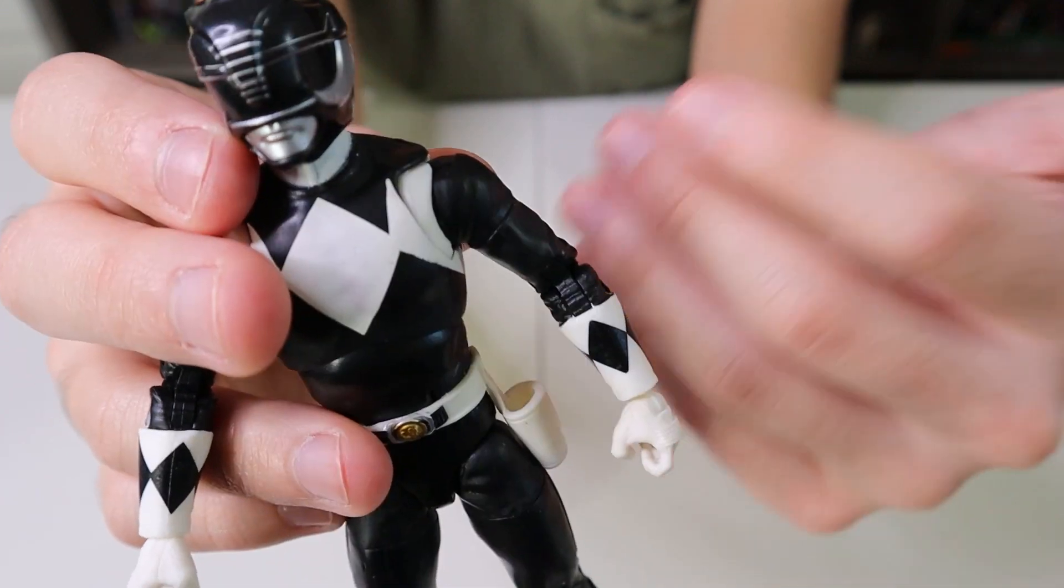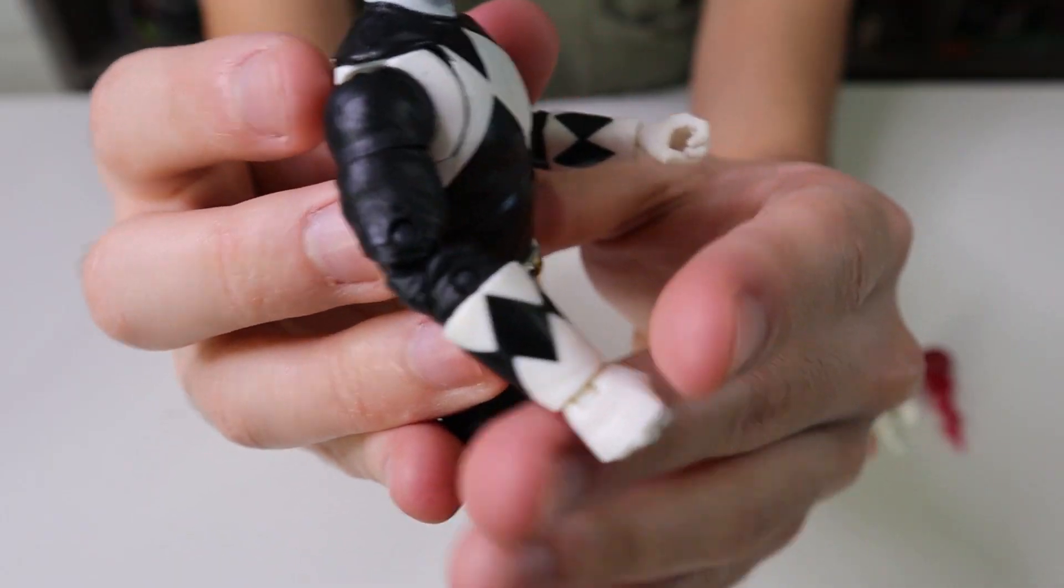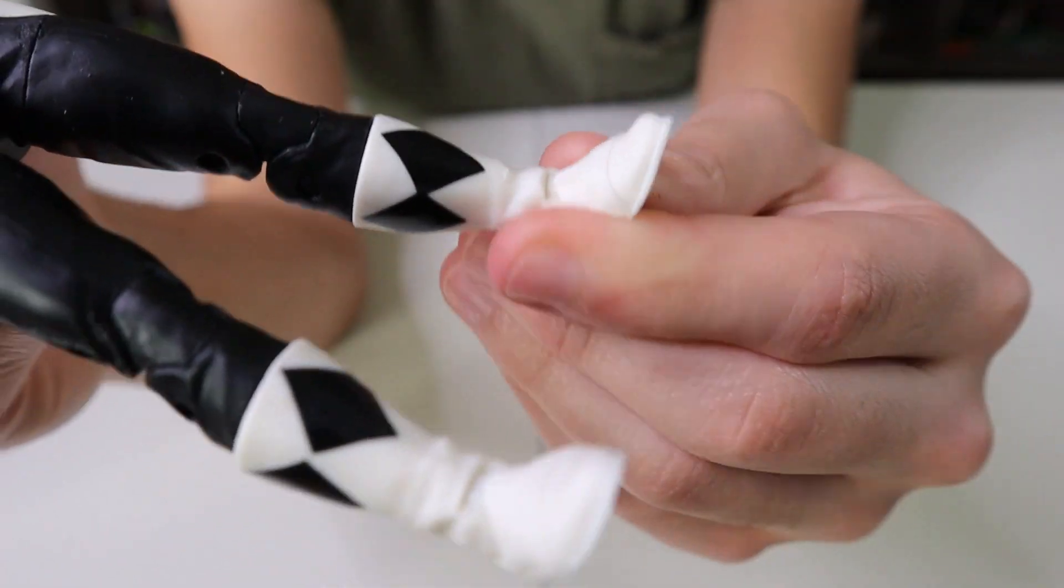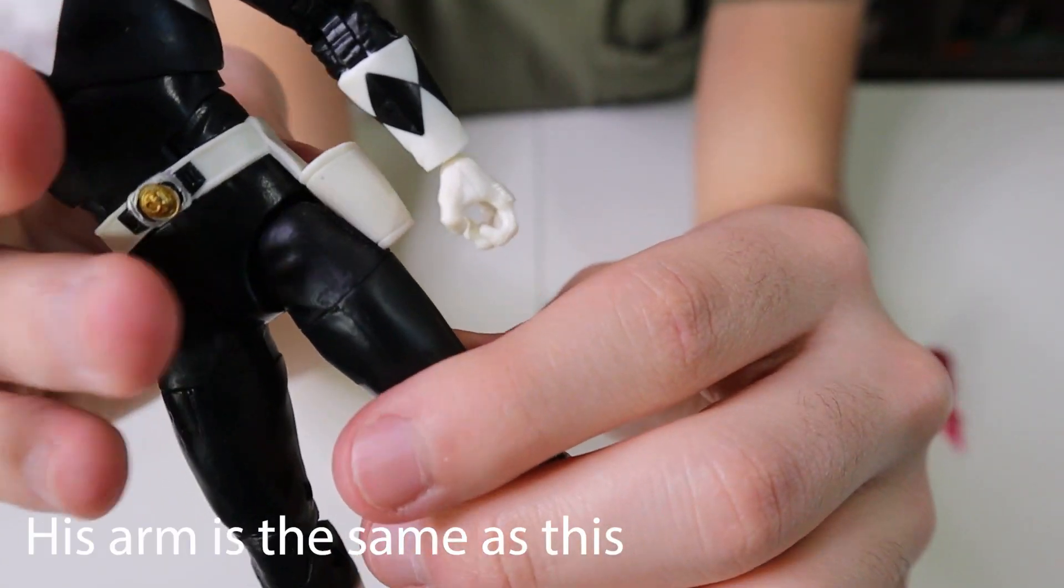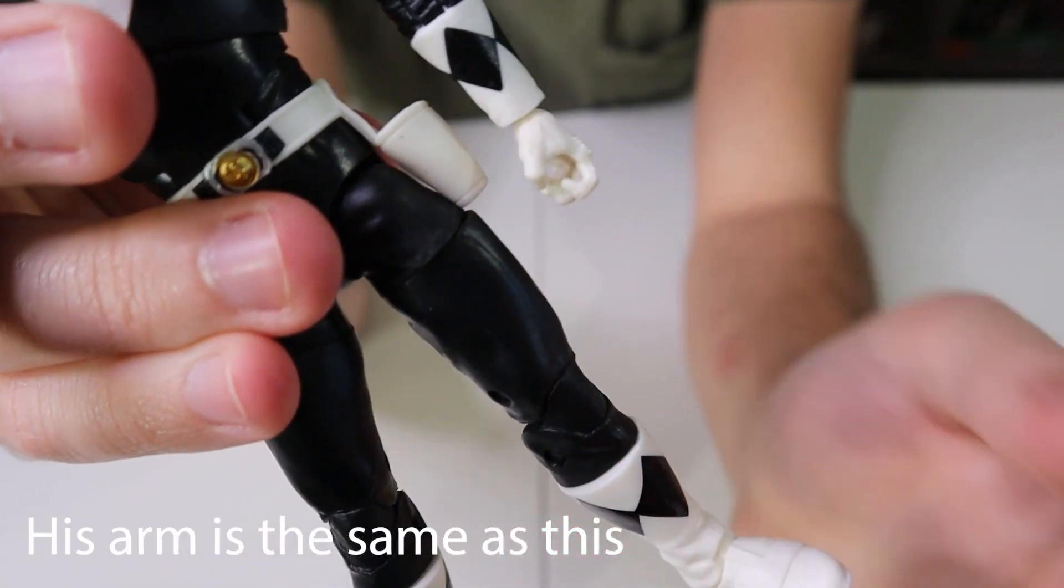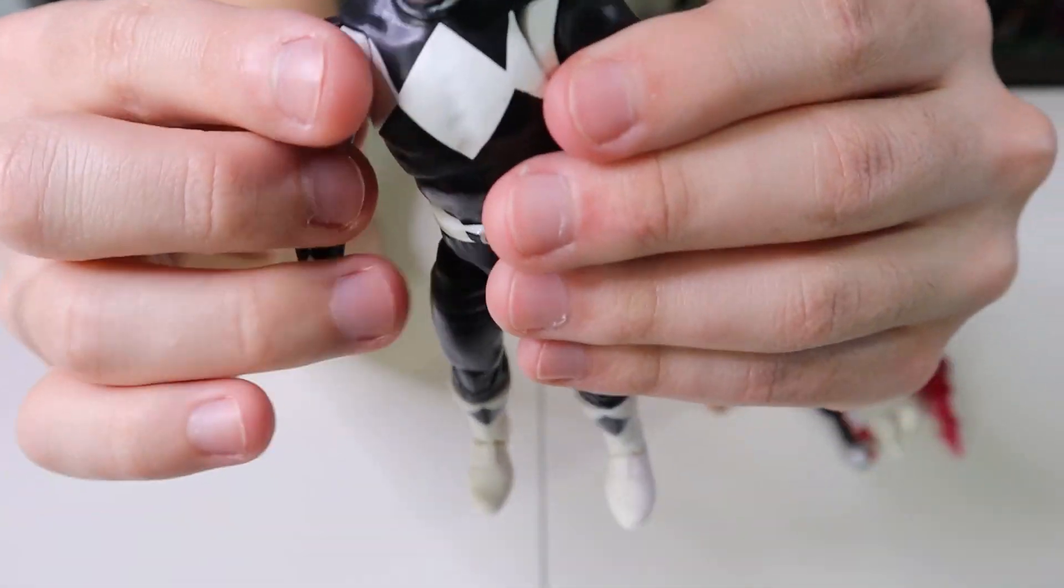So he has the same amount of rotation and articulation as any other Lightning Collection Ranger. Double-jointed elbows, double-jointed knees, his feet still have the same amount of rotation. Right here on his bicep and tricep, you can turn his arm. Back down to his thigh, you have a rotation right here that can turn his leg outward or inward. So I guess I'll move on to the accessories.